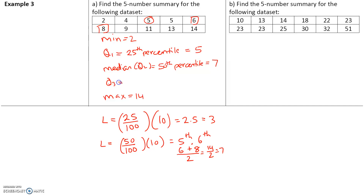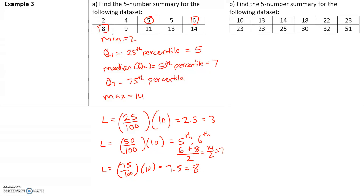Now let's find Q3, the 75th percentile. L equals 75 over 100 times 10, which equals 7.5. Since L is not a whole number, we round up to the next whole number, which is 8. The eighth data value is 11, so Q3 equals 11. Our complete five-number summary is: minimum = 2, Q1 = 5, median = 7, Q3 = 11, and maximum = 14.